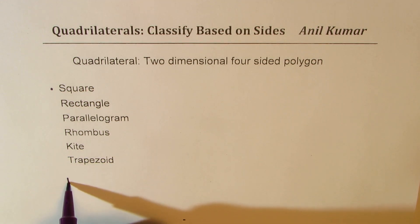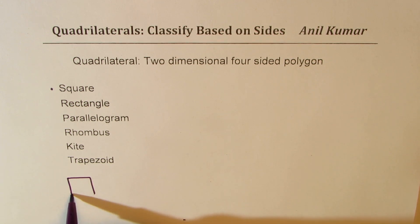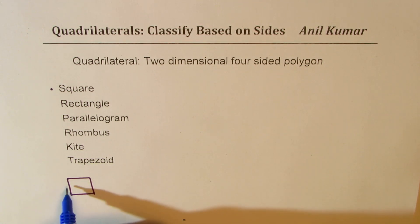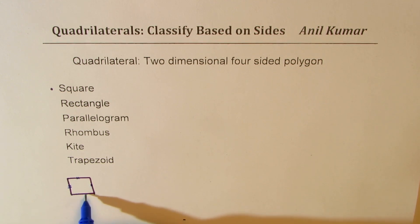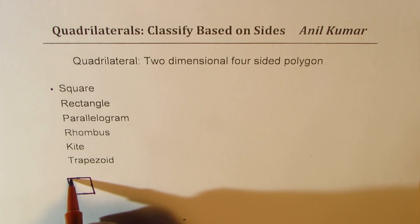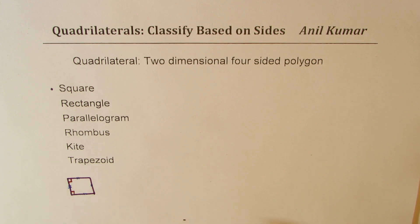When I say square, what I mean is a four-sided figure where all four sides have the same length and they are at right angles. So all four sides are equal, they are at right angles, and that also means all of them are parallel as well.